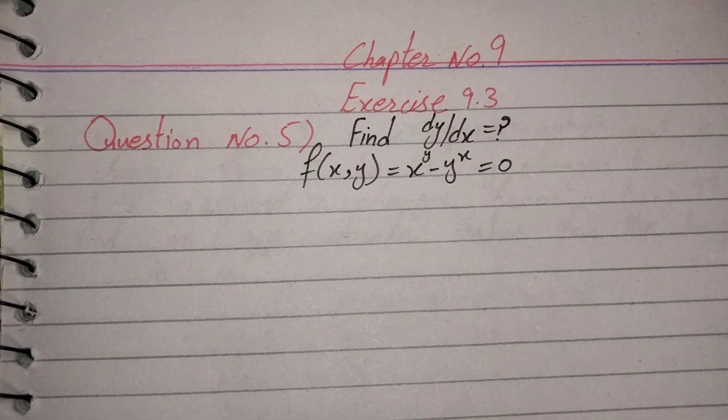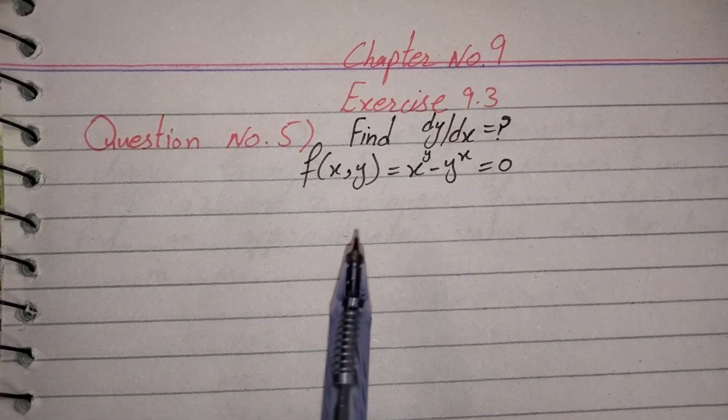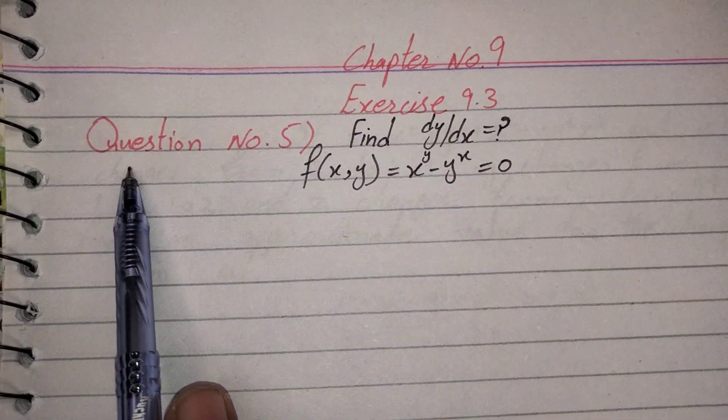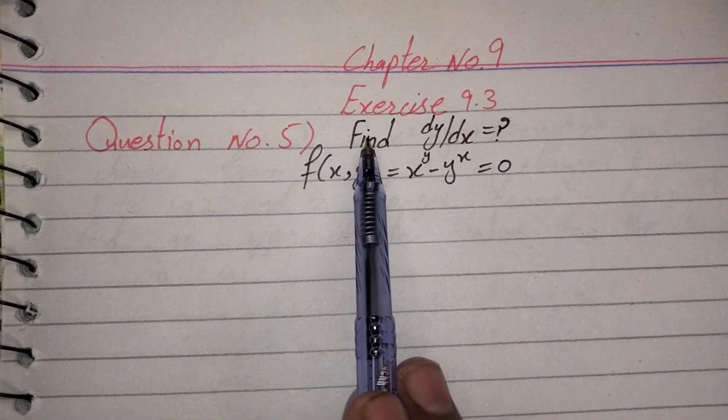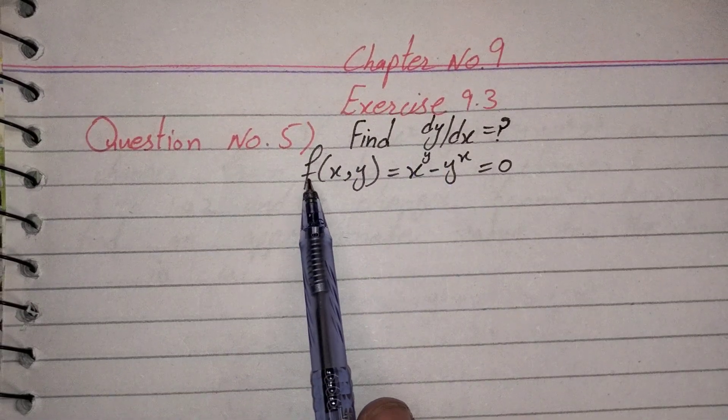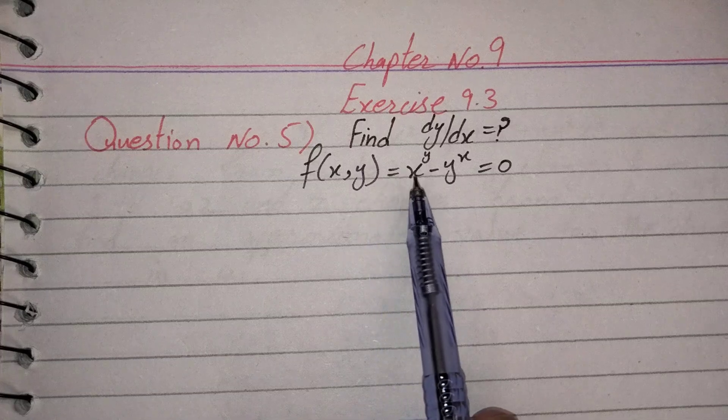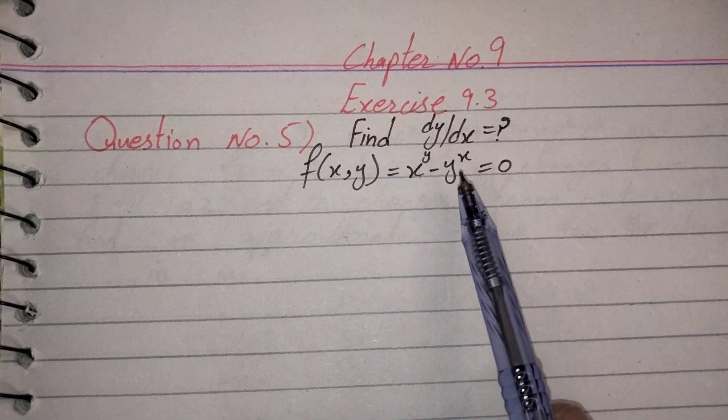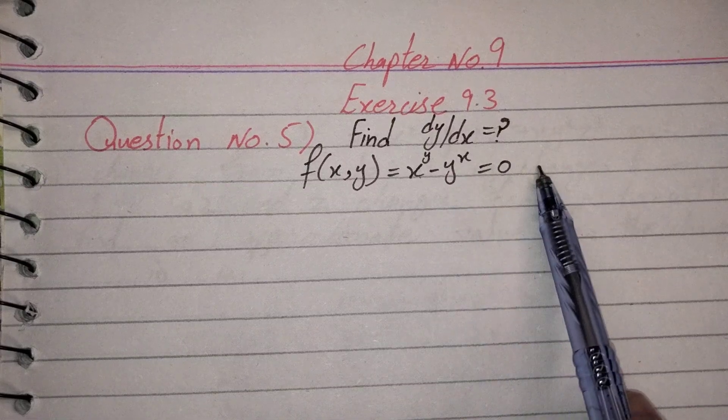Assalamu alaikum everyone. Today's topic is chapter number 9, exercise 9.3, question number 5. Find dy/dx. The function we have is f(x,y) = x^y - y^x = 0.